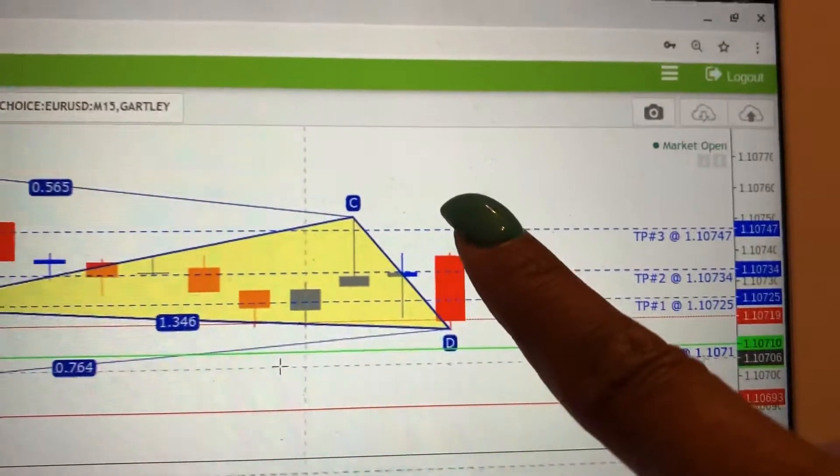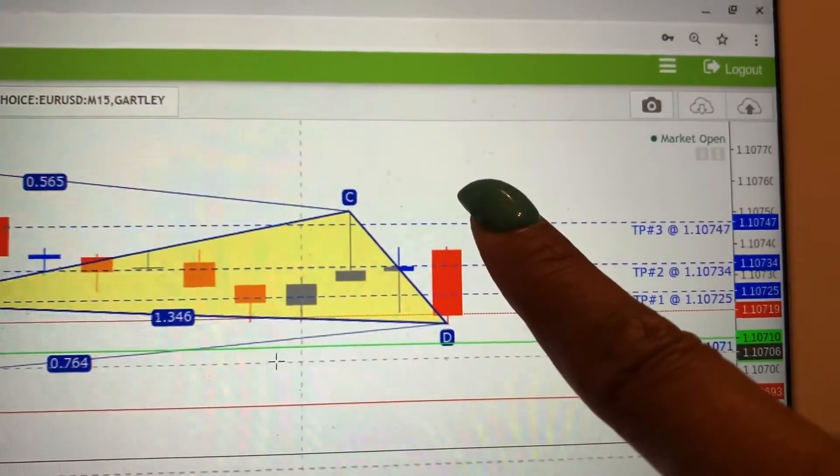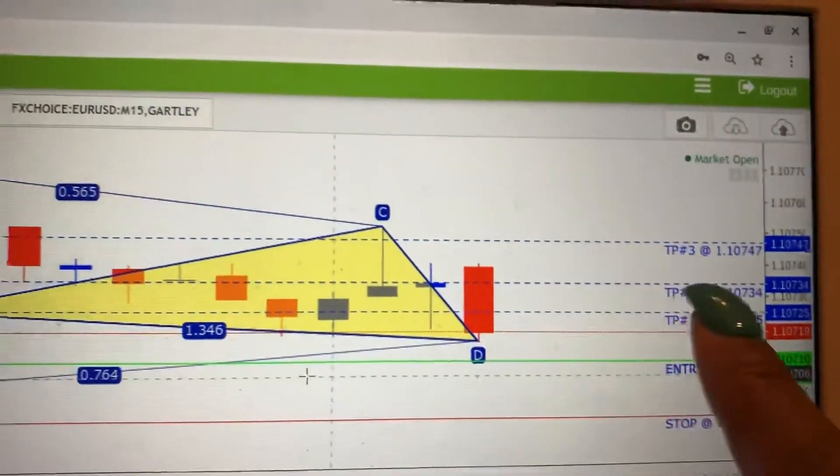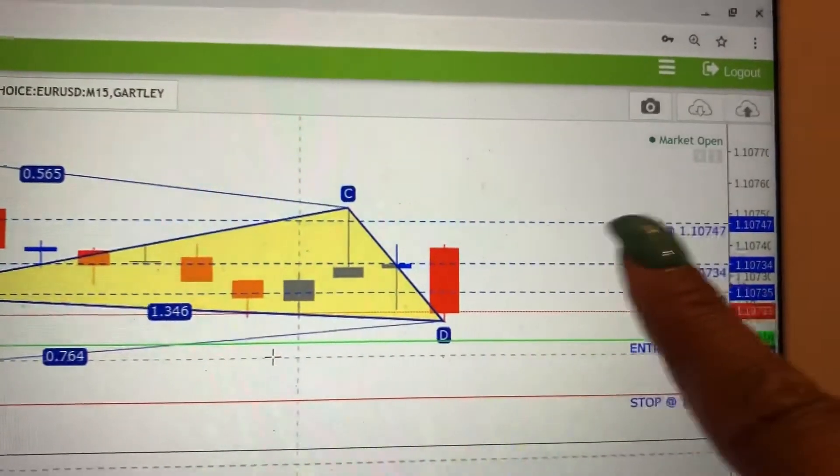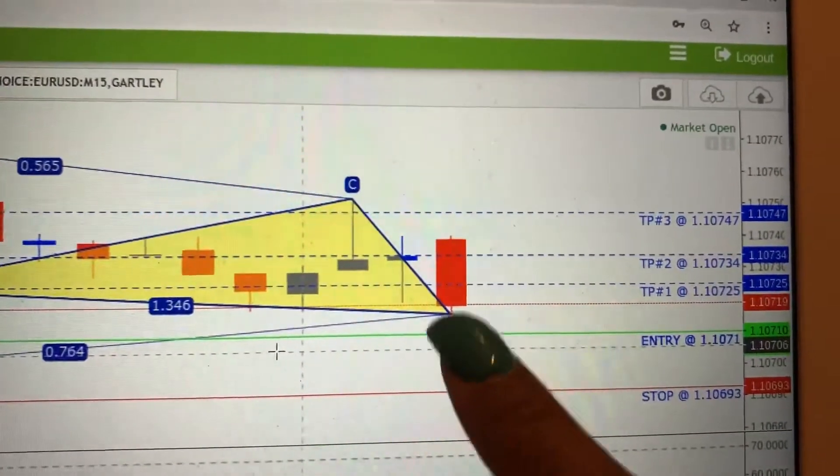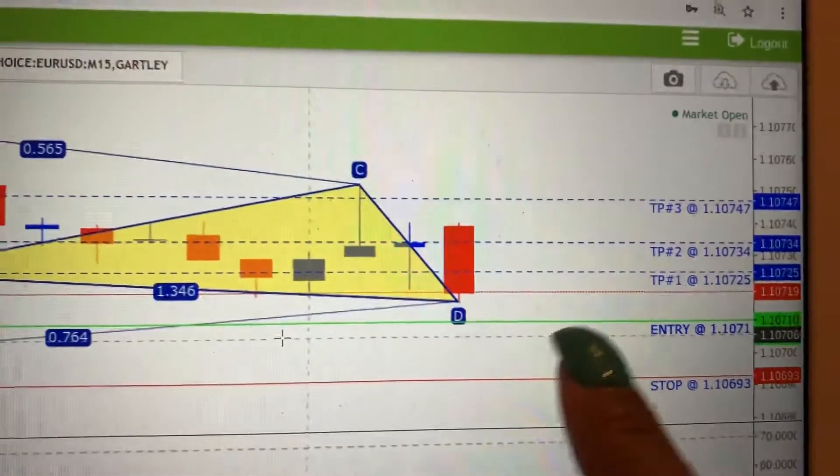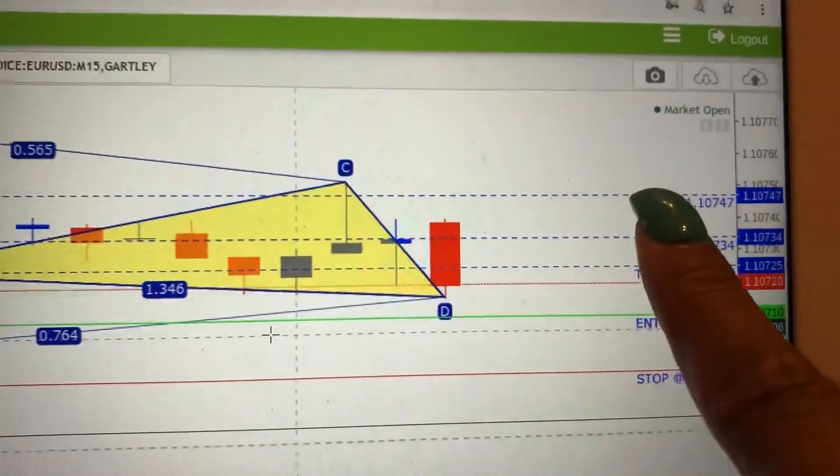If the D was up here, we would sell because the D would be up there and the take profits would be below the entry up there. But this is a buy because the D is low and entry is low and the take profits are above.